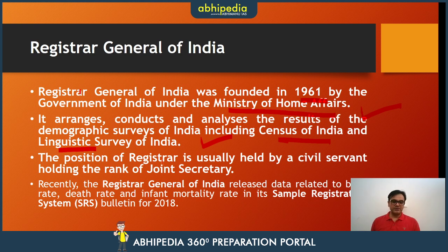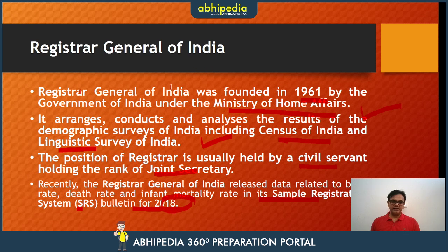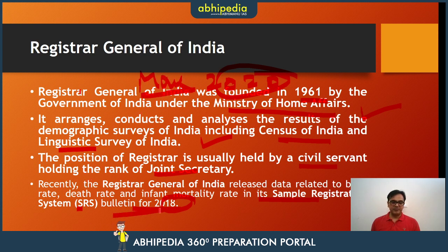The position of Registrar is usually held by a civil servant of the rank of Joint Secretary. Recently, the Office of the Registrar General of India released data on birth rate, death rate and IMR in its Sample Registration System Bulletin for 2018. This bulletin was released in May 2020 — it was released just a couple of days ago, but the bulletin itself covers data for 2018, not the current period.